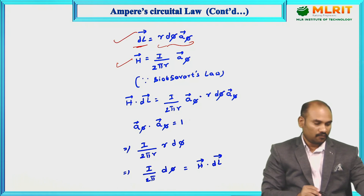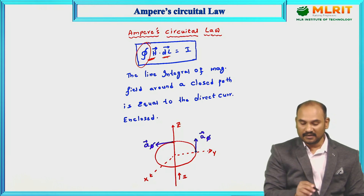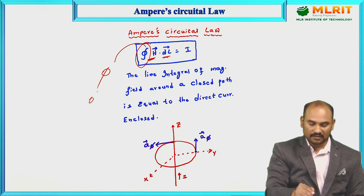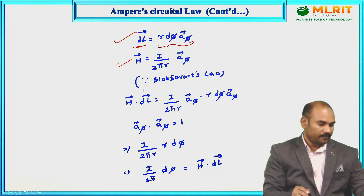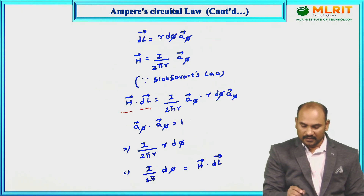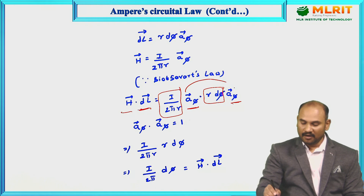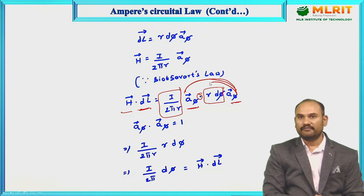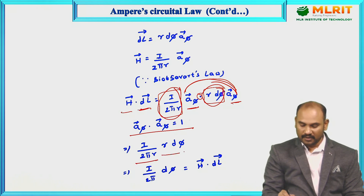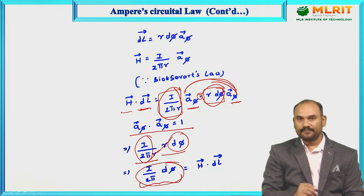Now you know H and dL. Compute H̄ · dL̄: H̄ = (I / 2πr) aφ and dL̄ = r dφ aφ. The dot product aφ · aφ = 1, so what remains is (I / 2πr) × r dφ. The r cancels, leaving I / (2π) dφ. This is the expression for H · dL.